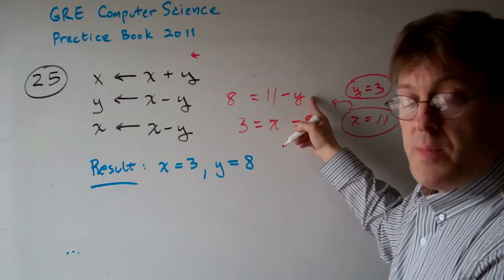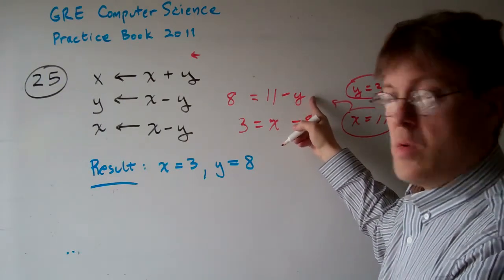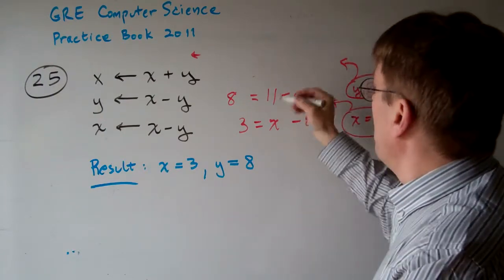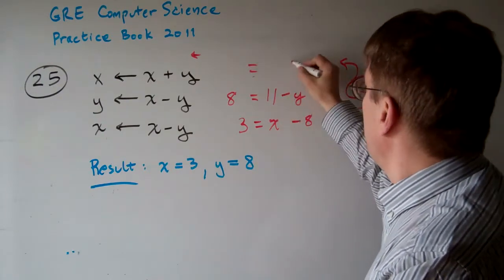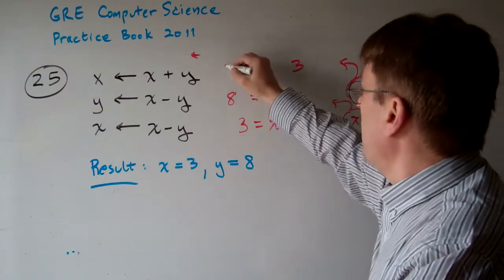Y would have to equal 3 in this step, otherwise the whole enchilada ain't going to work out, right? So we go up here and we have y is going to be 3, x is going to have to be 11.